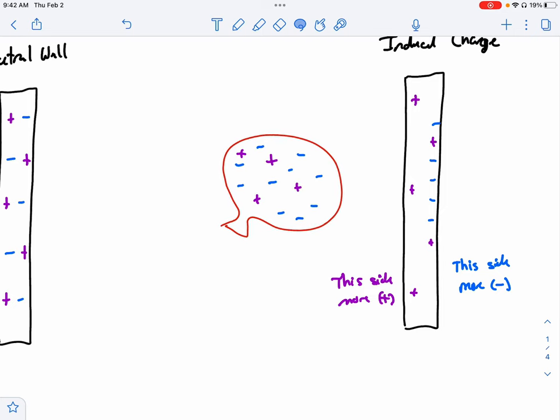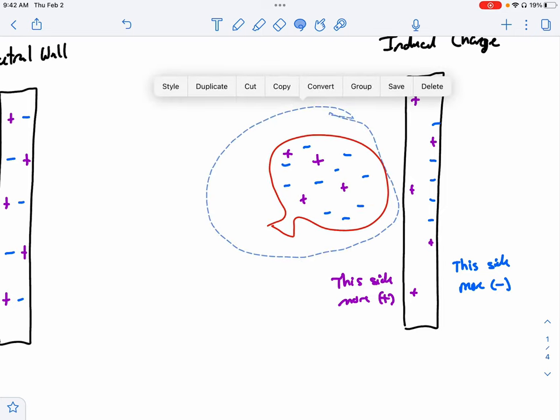It's a negative charge. We know that like charges repel. So the negative balloon will push away the negative electrons in the wall, causing them to separate. So they're pushed more towards one part of the wall, leaving the positives behind. See how there's a positive here, here, and here?